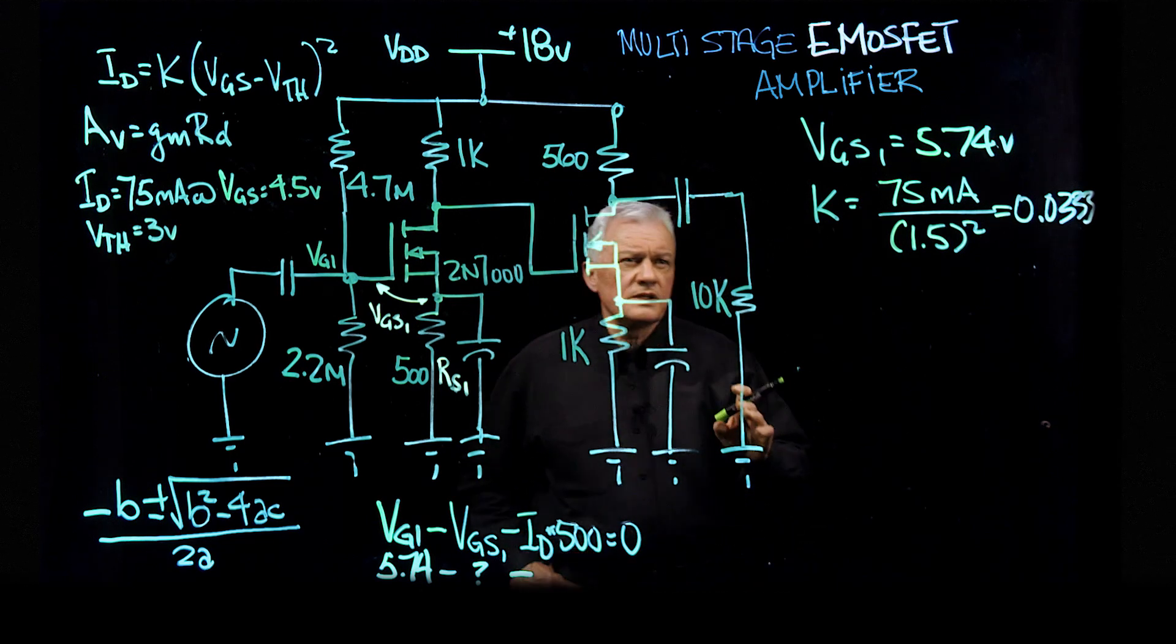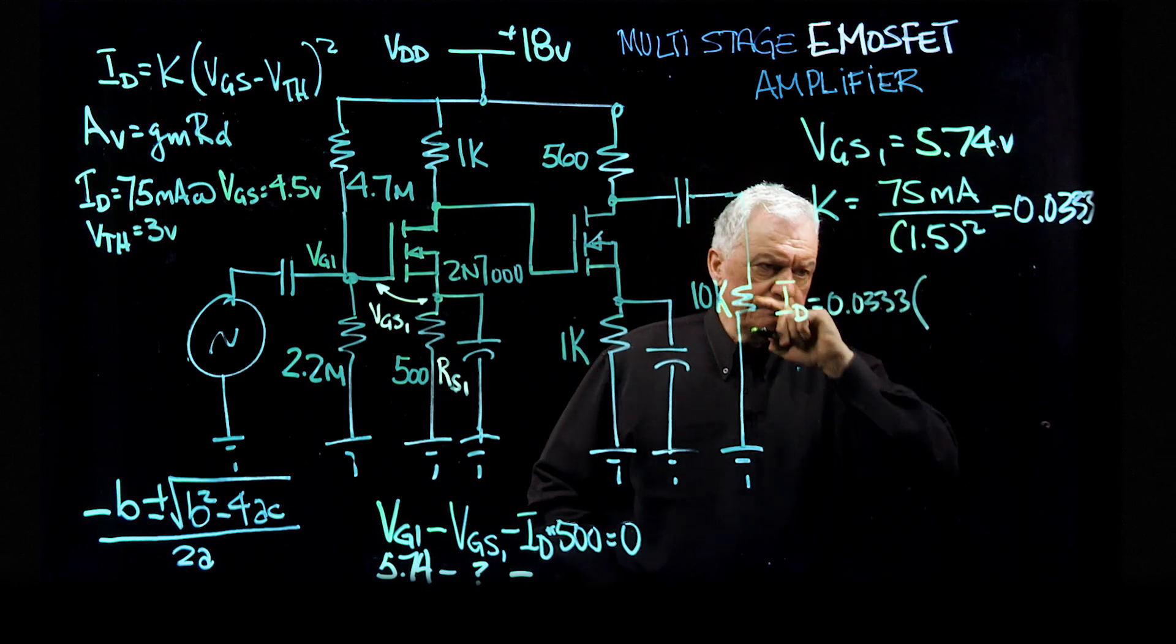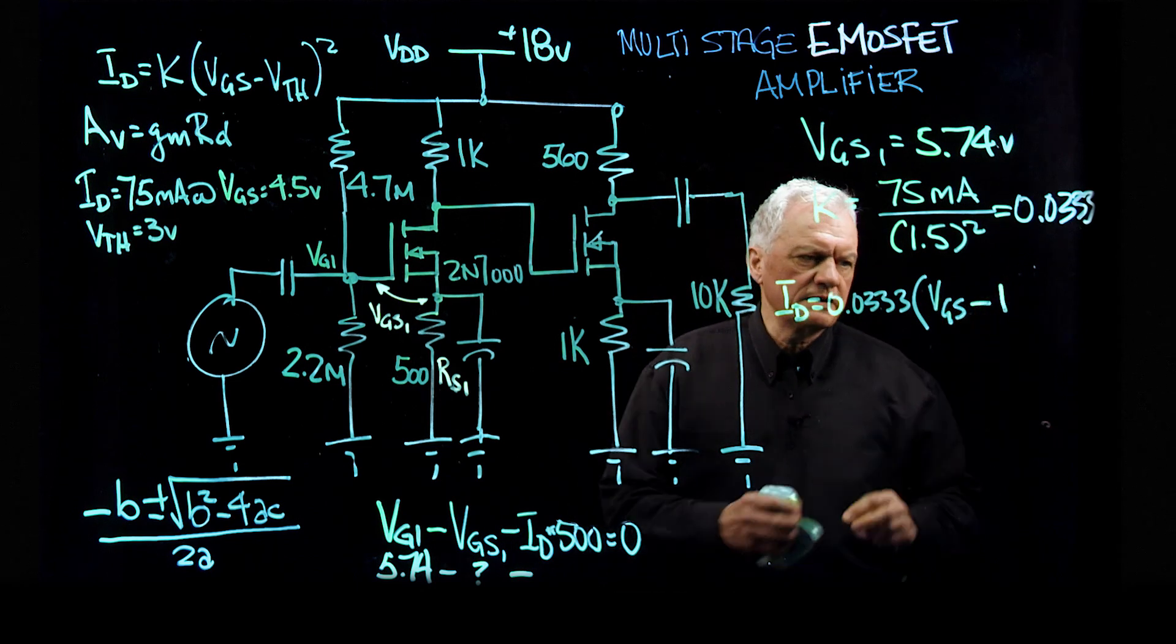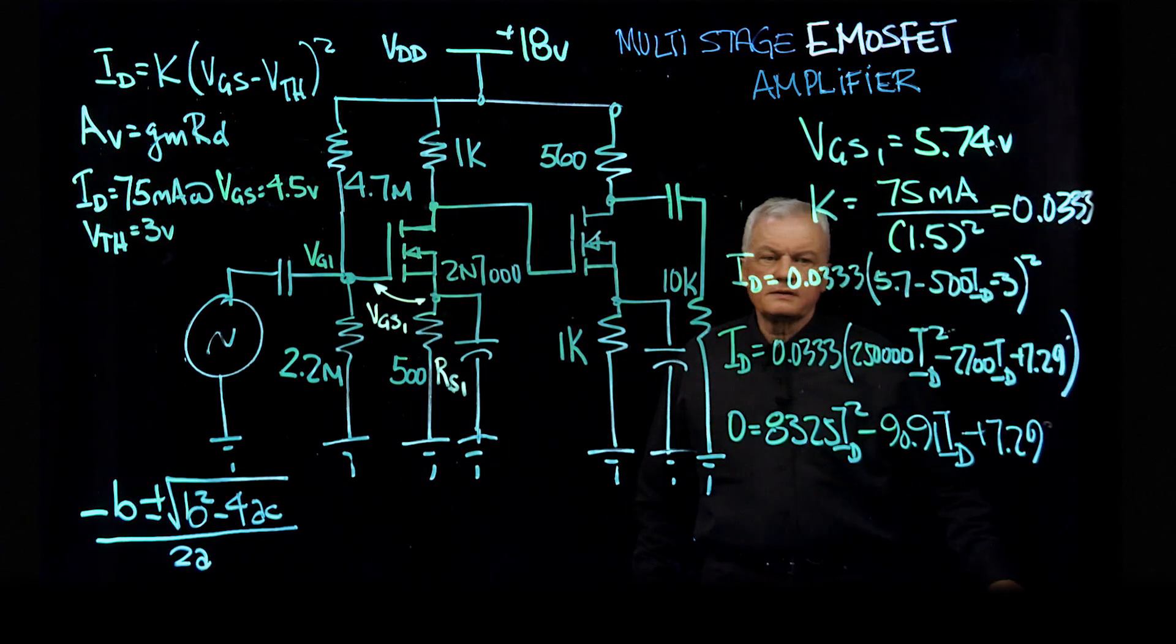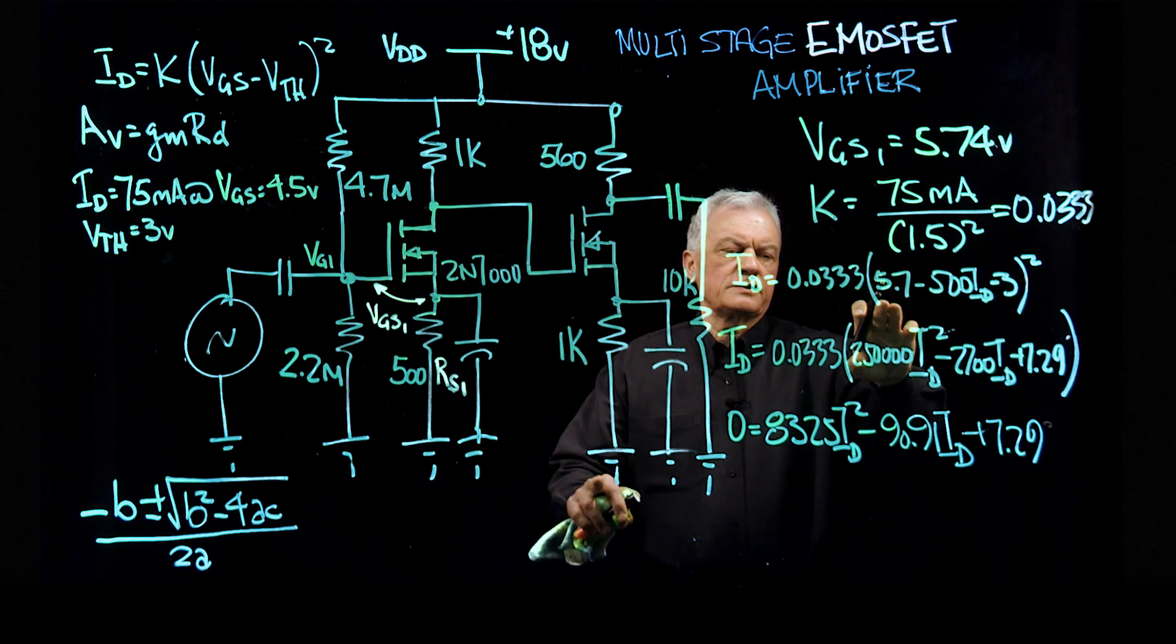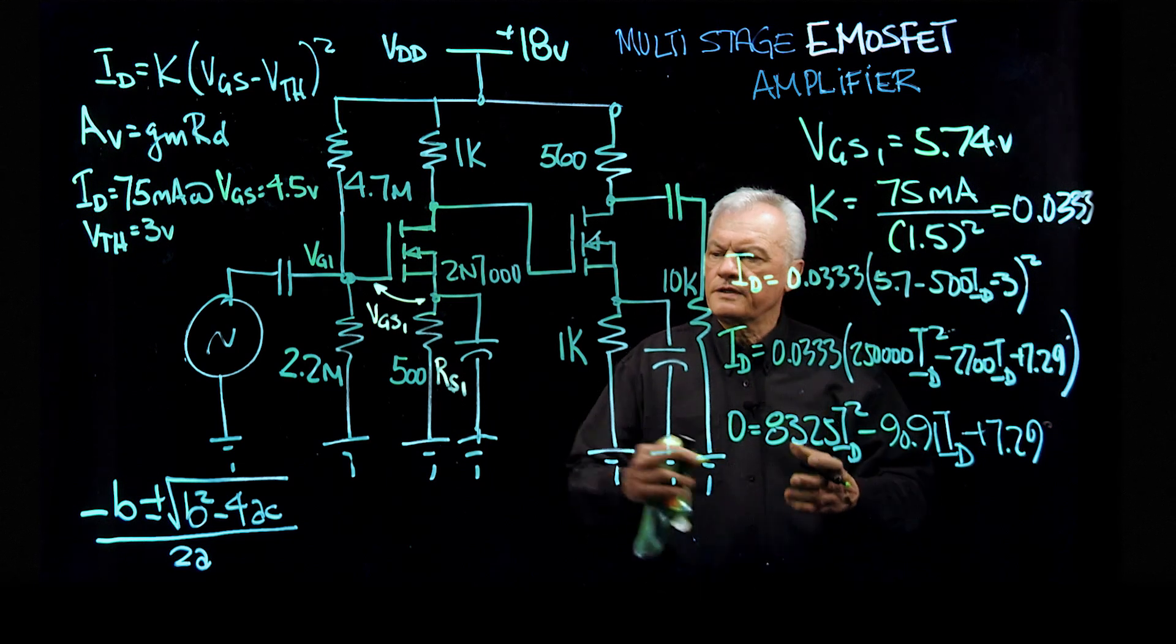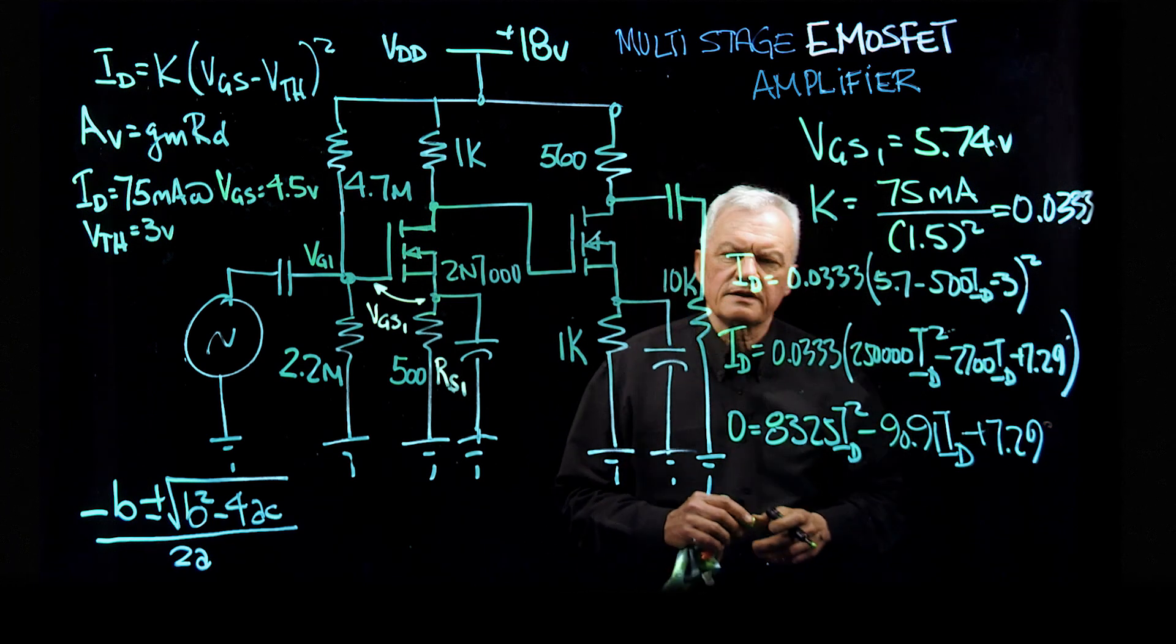Now what we're going to do is, let's use that formula for ID. So we're going to have 0.0333 times V gate source, which we don't know. And we do know the threshold voltage, which is 3 for this device. It was 1 for the previous device, minus 3, and that is all squared. So I just jumped ahead just to write the numbers out. We plugged in our values from our Kirchhoff's voltage laws. We had a voltage here, we have a voltage here, and we have a voltage generated by the current of the resistor there. So we plugged all those in to come up with an expression for VGS based on ID, RD.